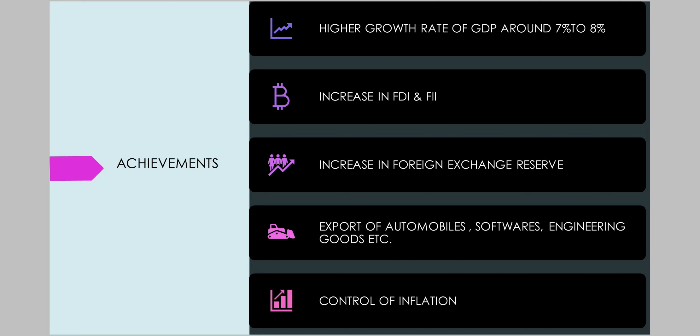Coming to achievements first. Because of NEP 1991, our GDP growth rate increased and it was around 7-8% per annum. There was a drastic increase in foreign direct investment and foreign institutional investment. Due to relaxation in restrictions on export and import, there was an increase in foreign exchange reserves. India became a successful exporter of many goods such as automobiles, software, engineering goods, etc., which were earlier imported. There was a control on inflation as well.